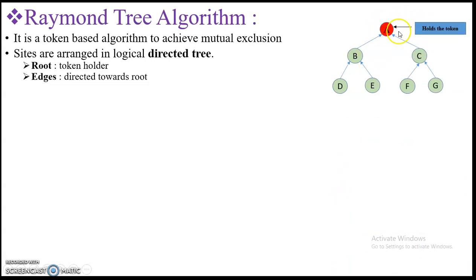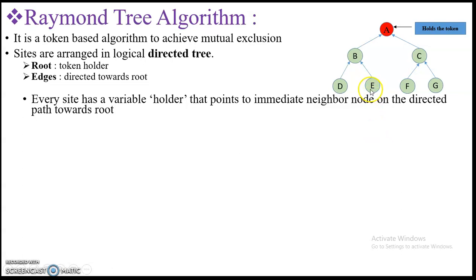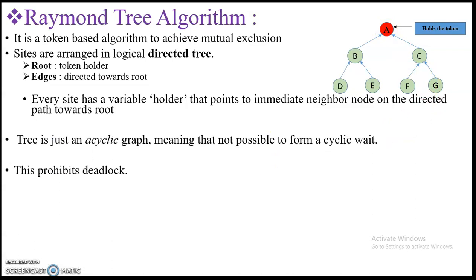Here, node A is holding the token and all the other nodes are pointing towards this root node. These edges direct nodes towards the root. Every site has a variable called 'holder' that points to the immediate neighbor node on the directed path towards the root. For example, for node D, the path to root is D→B→A, so D's immediate neighbor towards the root is B, and B's immediate neighbor is A.